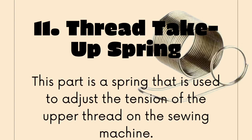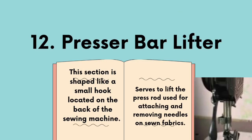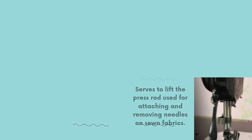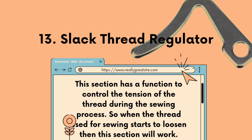Eleventh, the thread take-off spring. This part is a spring used to adjust the tension of the sewing machine. Twelfth, the presser bar lifter. This section is shaped like a small hook located on the back of the sewing machine, and serves to lift the press rod used for attaching and removing needles. Thirteenth, the lock thread regulator. This section has a function to control the tension of the thread during the sewing process. When the thread used for sewing starts to loosen, this section will work.